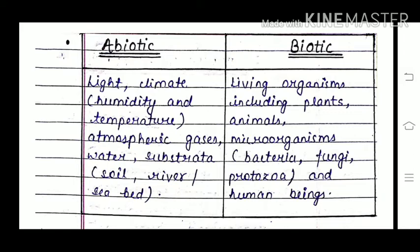Abiotic components are the non-living components such as light, climate, humidity, temperature, atmospheric gases, water, substrata, soil, river, seabed, etc.